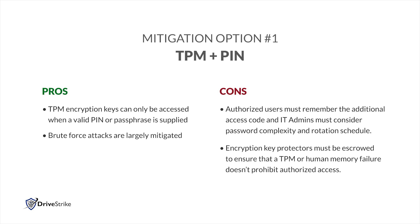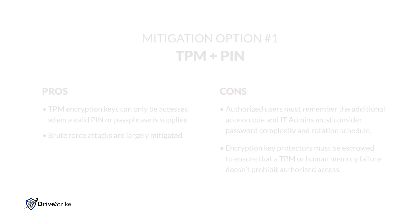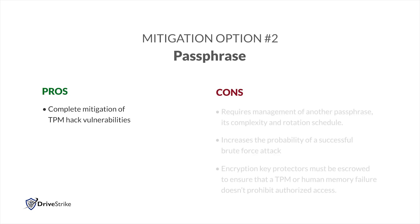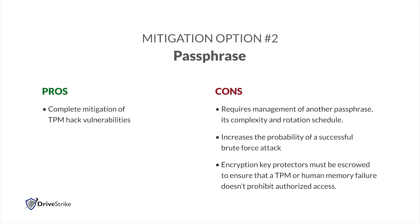Additionally, encryption key protectors must be escrowed somewhere to ensure that a TPM or human memory failure doesn't prohibit authorized access to critical operational data and applications. Passphrase: this completely mitigates TPM hack vulnerabilities, with the downside of introducing the requirement to manage another passphrase, its complexity and rotation schedule. Implementing a passphrase increases the probability of a successful brute force attack, because the likelihood of a passphrase being more complex than any other key protector is highly unlikely.